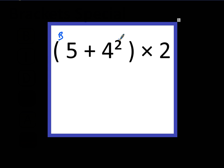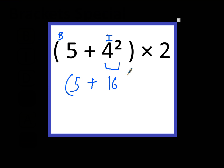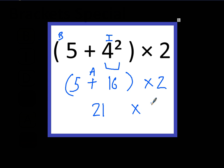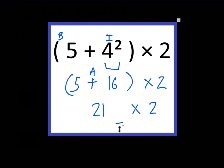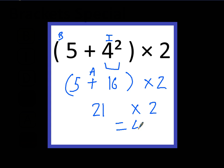So we look inside the brackets and apply the order of BIDMAS. You've got an index number there, so we evaluate that first — that's 16 and the 5. Keep it inside brackets for the time being, times by 2. Now we've got an addition, so we do that inside the brackets which is 21. We've done the brackets now so we do 21 times 2, and the answer is 42.